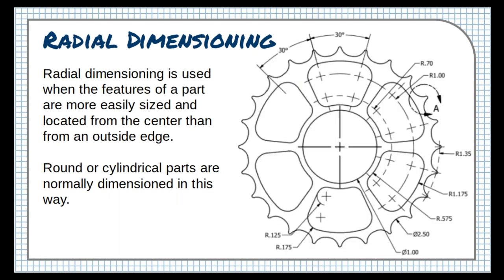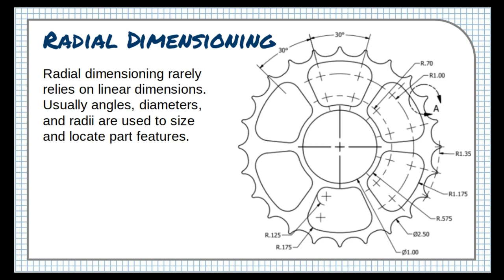Radial dimensioning is used when the features of a part are more easily sized and located from the center than from an outside edge. Round or cylindrical parts are normally dimensioned in this way. Radial dimensioning rarely relies on linear dimensions. Usually angles, diameters, and radii are used to size and locate part features.